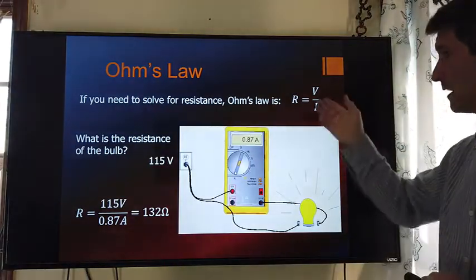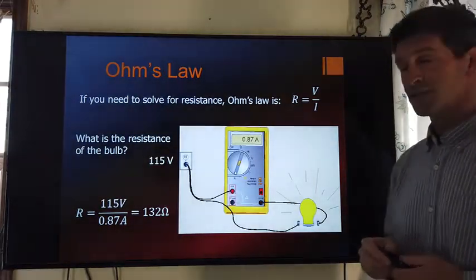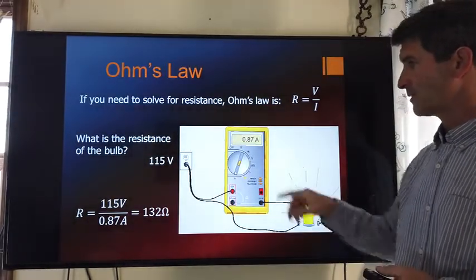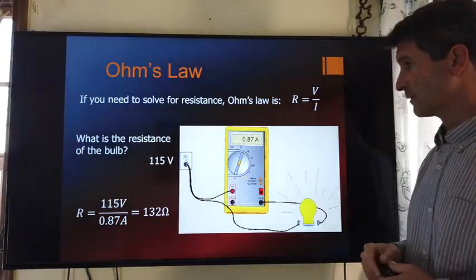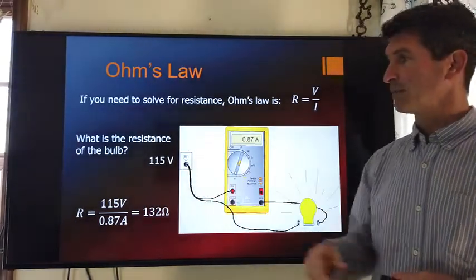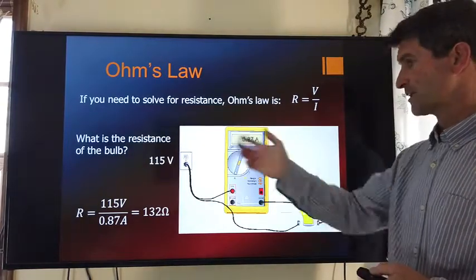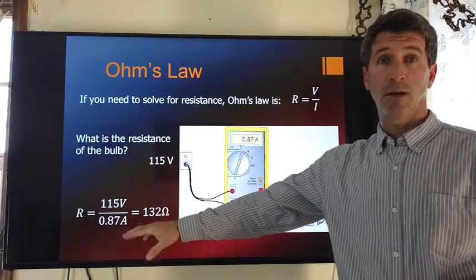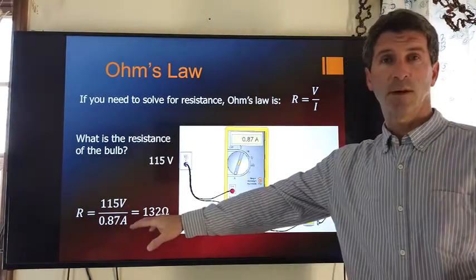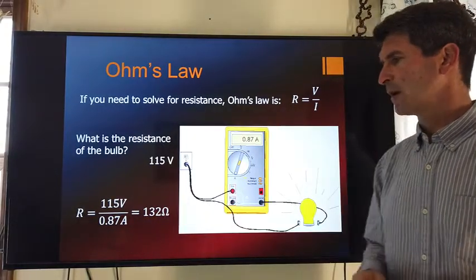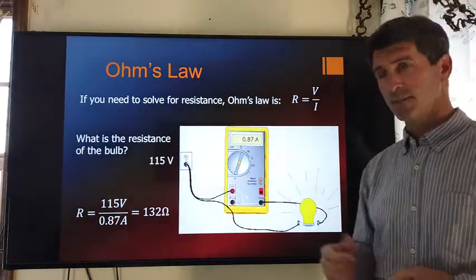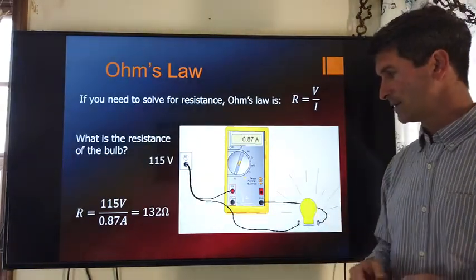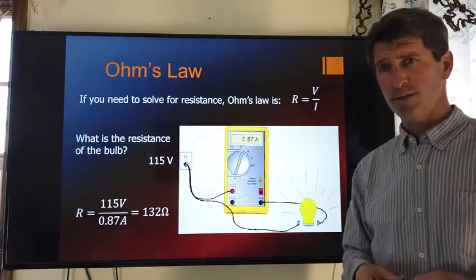Another example of solving. Now we're going to solve for resistance given voltage and current. Let's say that I have a light bulb right here. I measure that there's 0.87 amps going through it. I know it's plugged into a 115 volt power source. That's house current. What is the resistance? R equals V over I. 115 divided by 0.87. I have 132 ohms in the filament, if that's an incandescent bulb, that the current is traveling through there.